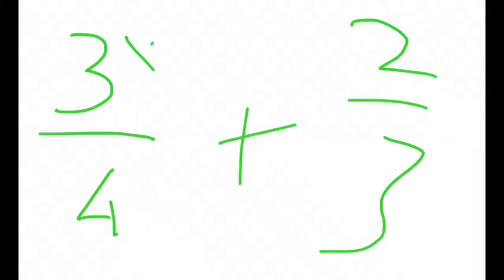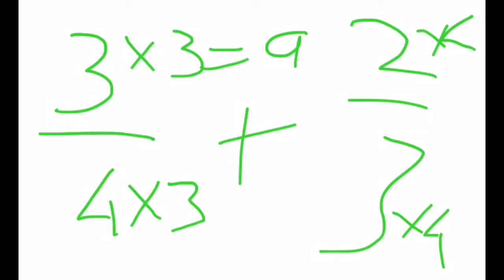We're going to time this by 3, time this by 3 again, time this by 4, and time this by 4. This will equal 9, this will equal 12, this will equal 12 again, so I'll put it here. And this will equal 8.